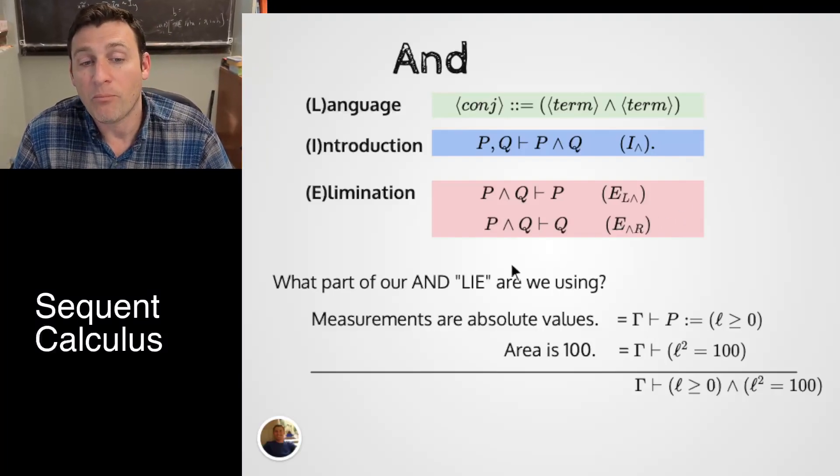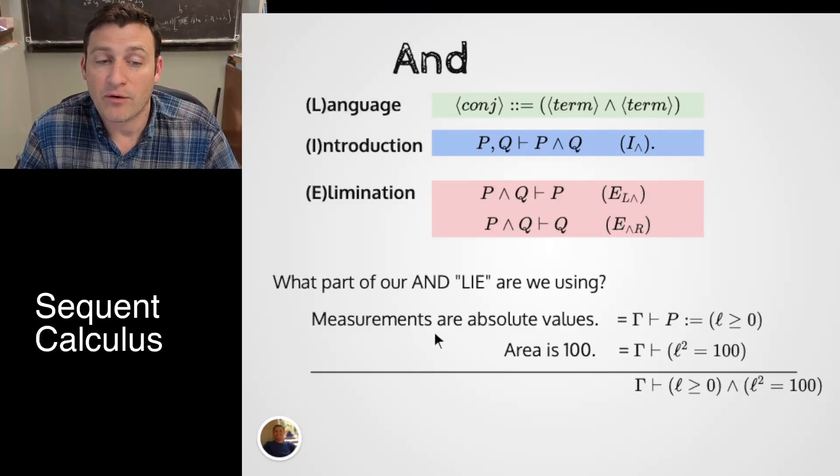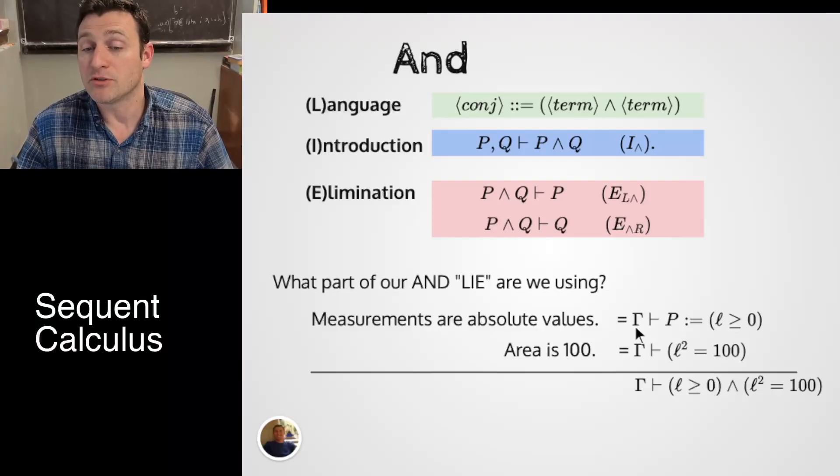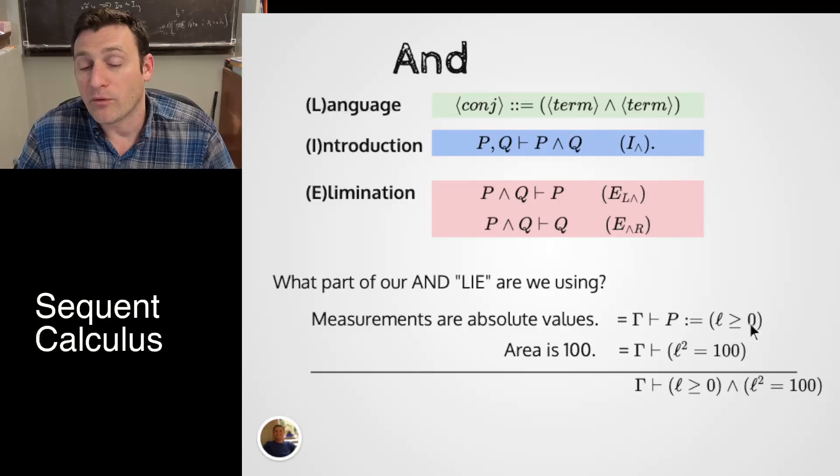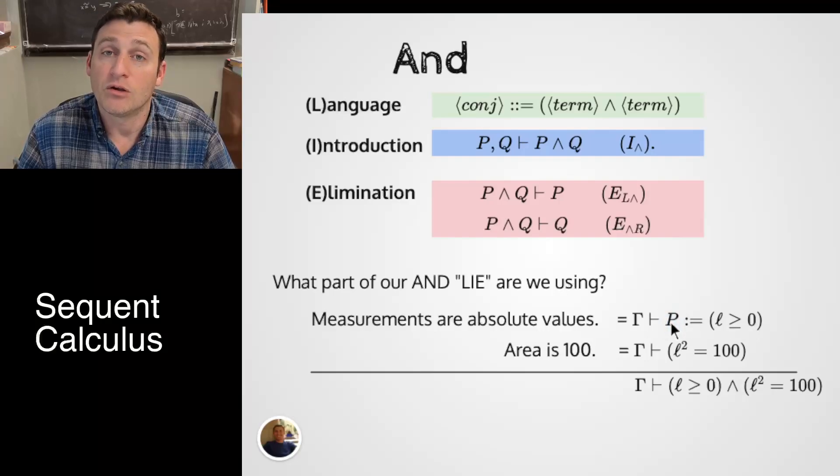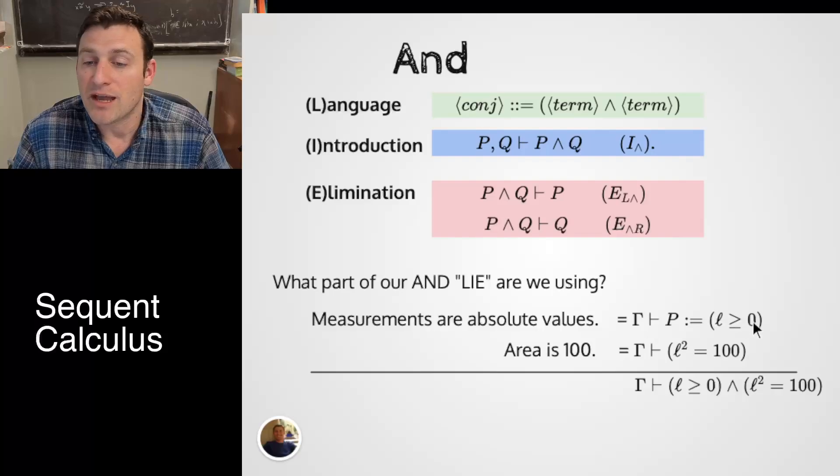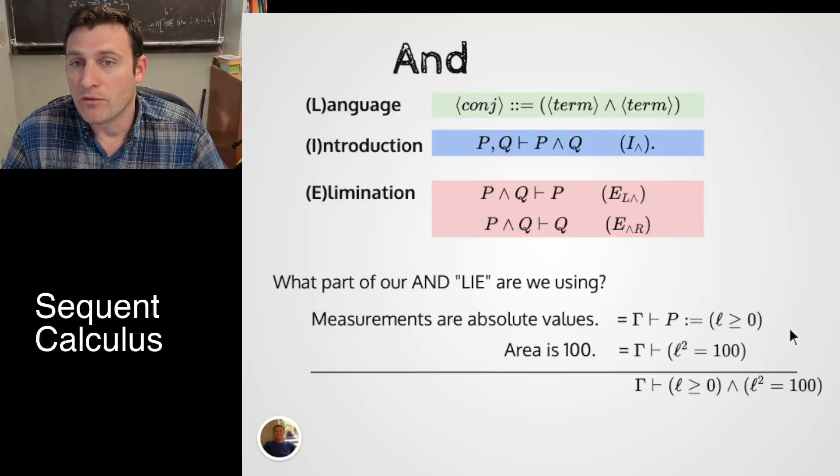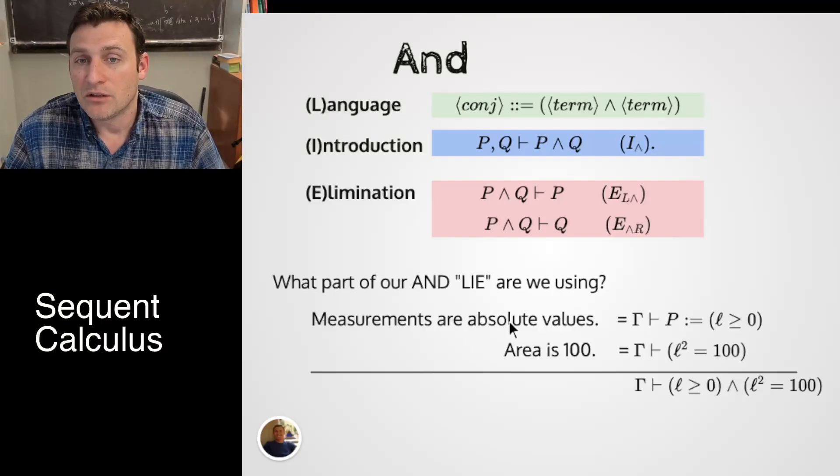Here I have AND in use, but I'd like to ask where am I using the L, I, or E? What part of these am I using? So here let's read the sentences together. Measurements are absolute values. I'm going to turn that into symbols by saying the context is telling me that L is greater than or equal to zero. I'll call that conclusion P. That's the sentence, measurements are absolute values. Absolute values are things that are greater than zero. So it's a symbol version on the right and a word version on the left.